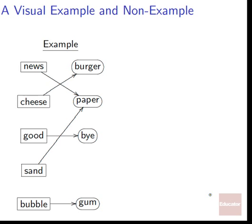Here's a visual example. We could have something where all the squares are the first set and all the round things on the other side are our second set. News gets mapped to paper, cheese gets mapped to burger, good gets mapped to buy, sand gets mapped to paper, and bubble gets mapped to gum. There are only five elements in our first set and only four elements in our second set, but this is a perfectly reasonable function.